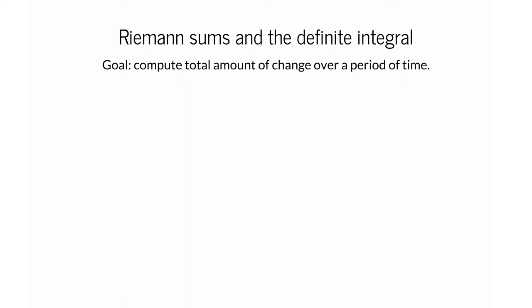In this lecture, we discuss how to compute the total amount of change of a function during a period of time. We'll calculate this using a definite integral, which is defined as a limit of something called a Riemann sum.